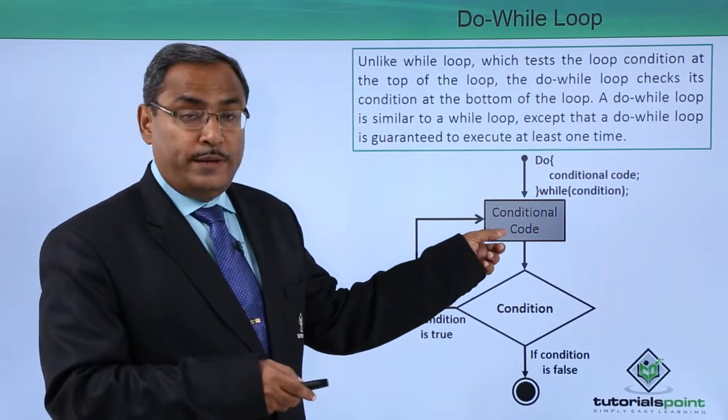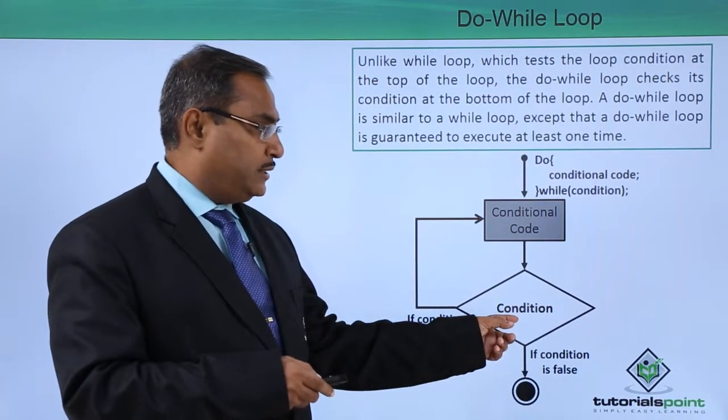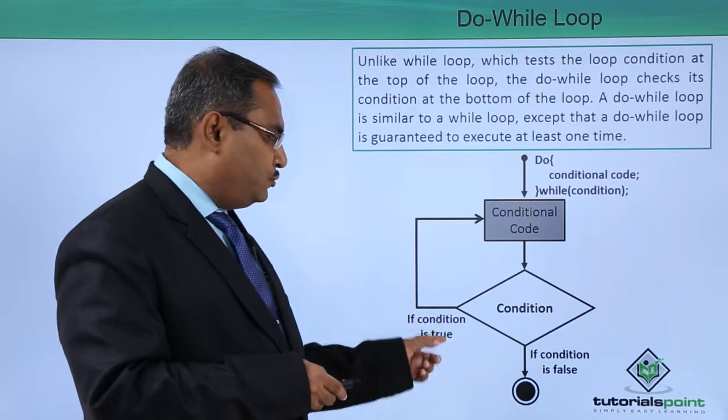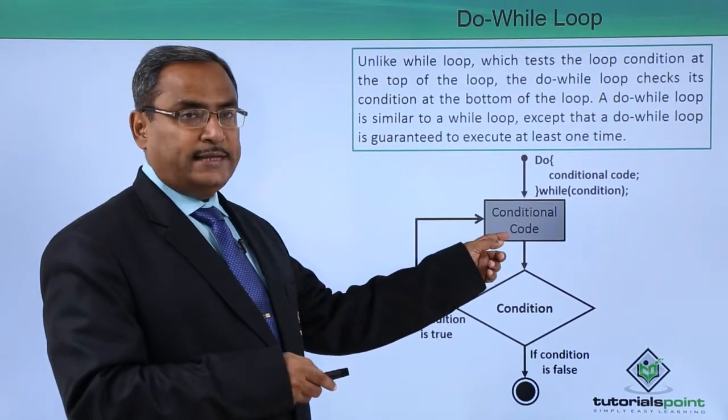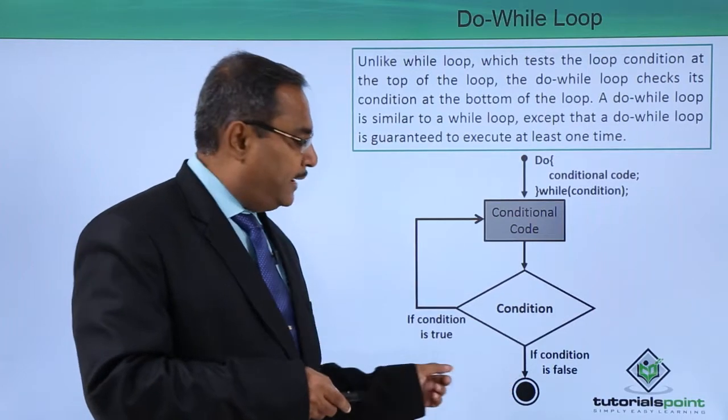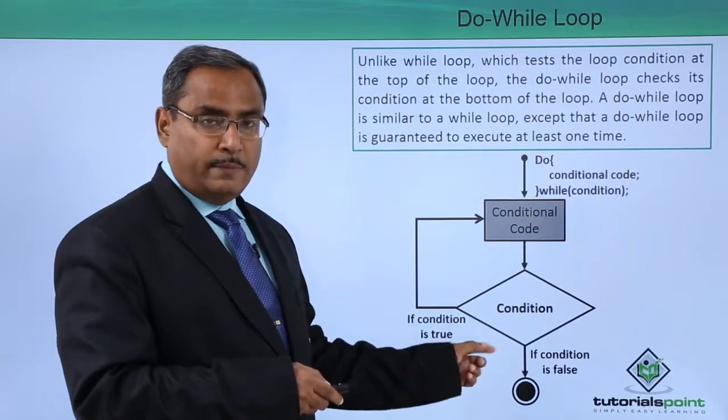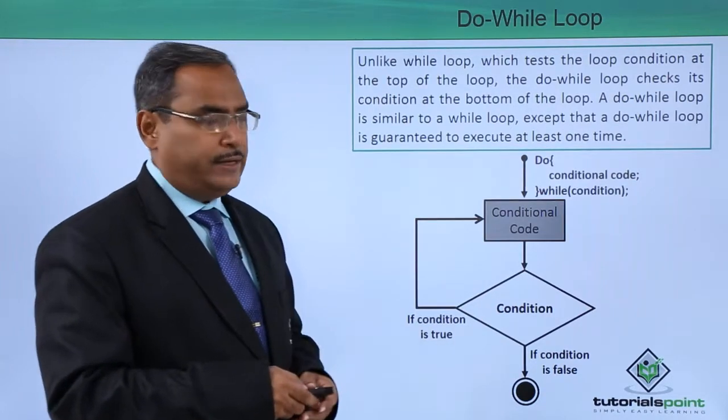Here we are having the conditional code which will be executed first and then the condition will be checked. If the condition is true then again the conditional code will get executed. If it is false then it will come out and the next line just after this do-while loop will be executed.